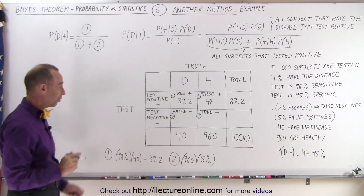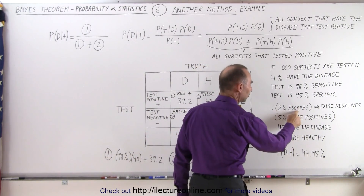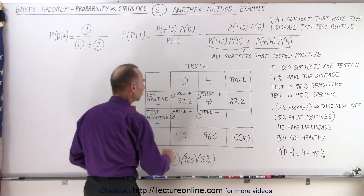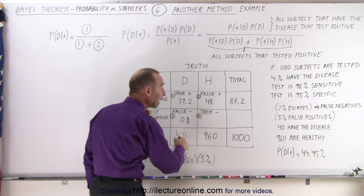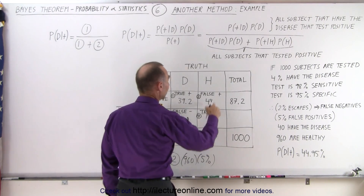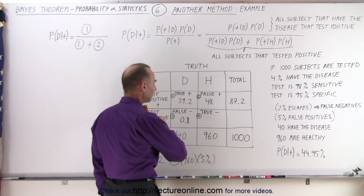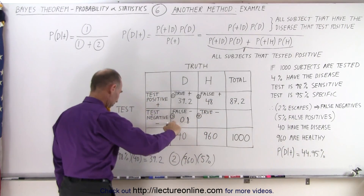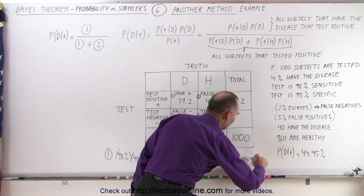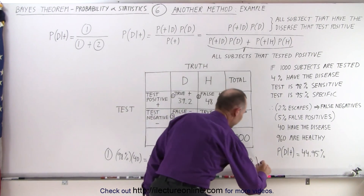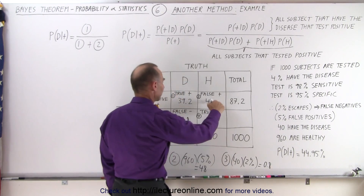If you add those two together that gives you 87.2. While we're at it, let's fill out the other boxes. How many will test negative if they actually have the disease? That would be 2% — 2% are called false negatives. 2% of the 40 that have the disease is 0.8, and notice that should always add up: 0.8 added to 39.2 does indeed add up to 40. For box number three, we have 40 with the disease multiplied by 2%, giving us 0.8. And 48 goes in that corresponding box.